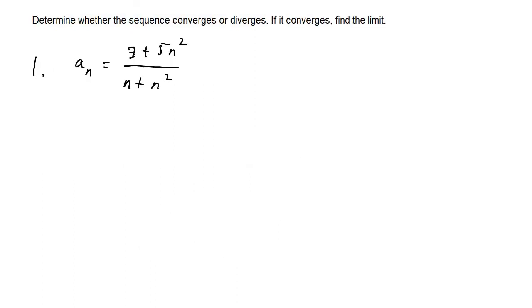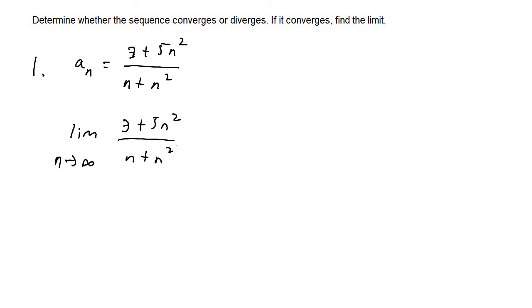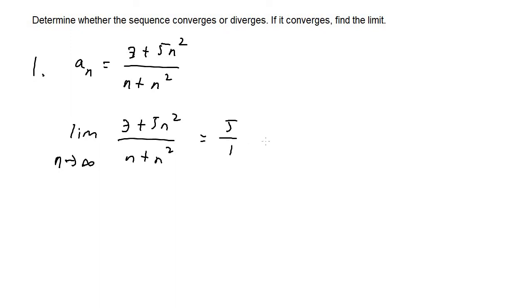For the next set of problems, we determine whether a sequence converges or diverges, and if it converges, we find the limit. For sequences, all we have to do is evaluate the limit as n approaches infinity. For number one, a_sub_n equals (3 plus 5n²) over (n plus n²). The highest degree in the numerator is n² with coefficient 5, and the highest degree in the denominator is also n² with coefficient 1, so the limit is 5 over 1, which equals 5. The sequence converges to 5.